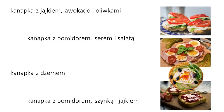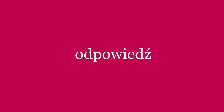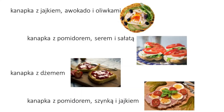And now let's try the other one. Co to jest? Kanapka z jajkiem, awokado i oliwkami. Kanapka z pomidorem, serem i sałatą. Kanapka z dżemem. Kanapka z pomidorem, szynką i jajkiem.